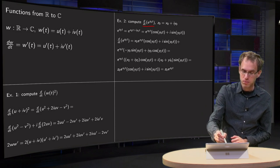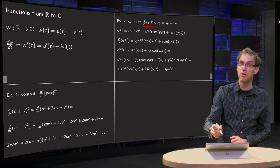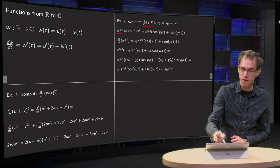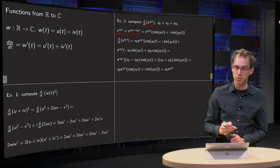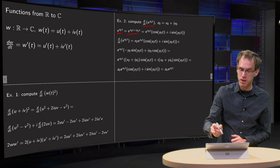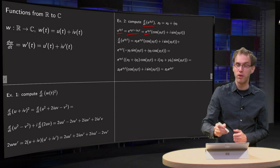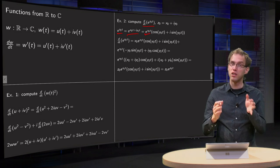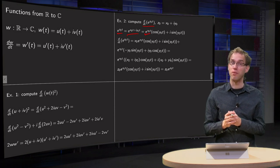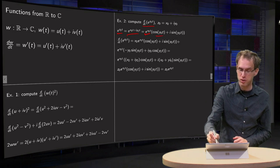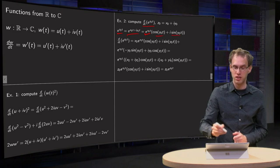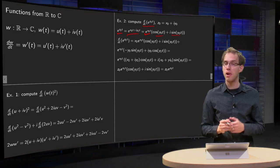Well, let's try. First we compute e^(z₀·t) = e^(x₀·t + i·y₀·t) = e^(x₀·t) · e^(i·y₀·t), which yields e^(x₀·t) · (cos(y₀·t) + i·sin(y₀·t)).